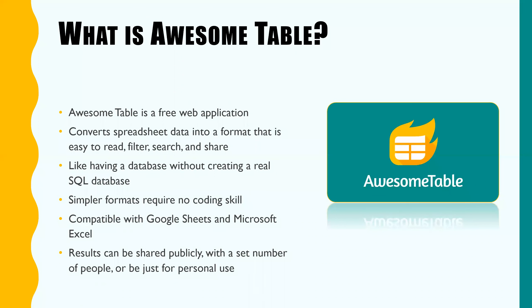So what is Awesome Table? Awesome Table is a free web application that transforms spreadsheet data so that it's easier to search, sort, filter, and share your data. This data can be text, it can be numbers, hyperlinks, and even pictures. It creates something kind of like a database except you don't actually have to know how to program it, which is good for those of us who are not coders or programmers. It works with data both in Microsoft Excel and in Google Sheets. Today we'll be talking about Google Sheets exclusively since that's what I've used it with before, and the Microsoft Excel capability is pretty recent.